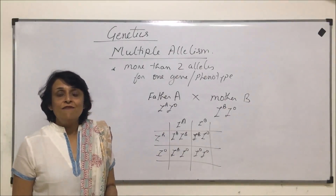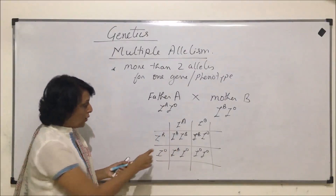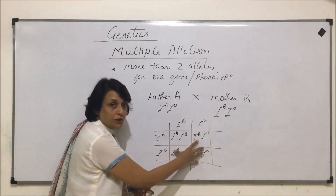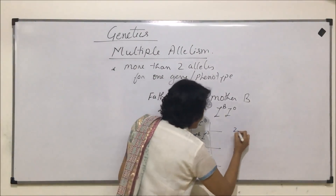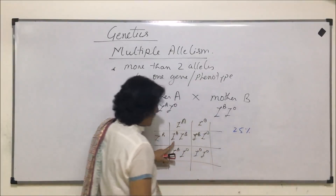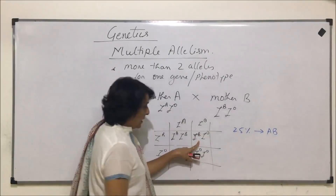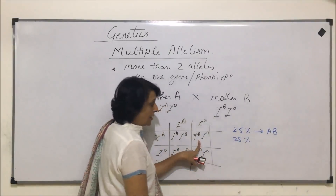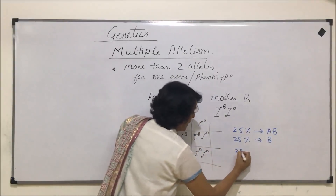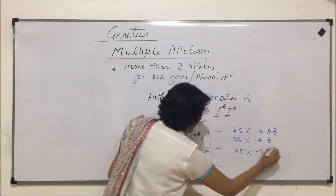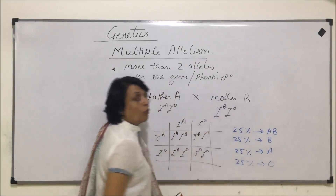That means there are 25% chances of having every blood group. Out of the four possibilities, 25% chances the offspring will have AB, 25% will have blood group B, 25% chances of blood group A, and 25% chances of blood group O.